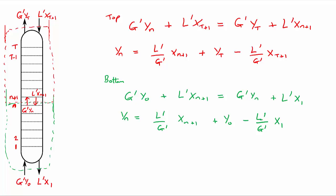It turns out that these two equations are actually the same line, with the same gradient — and that gradient is L prime over G prime. This same line passes through the points (X_1, Y_0), which is the composition at the bottom of our column, and also (X_(T+1), Y_T), which is the composition at the top of our column. We can use this key information when designing our column.